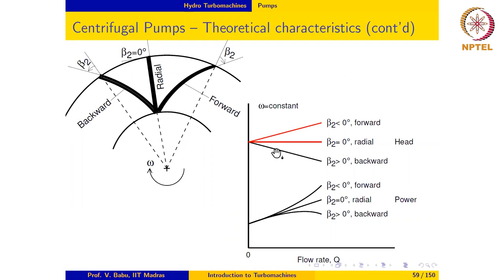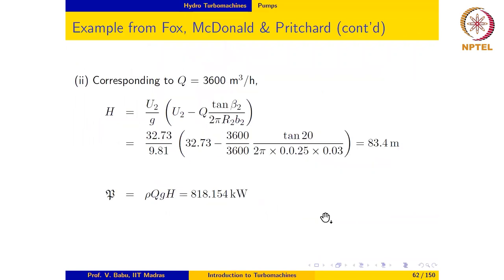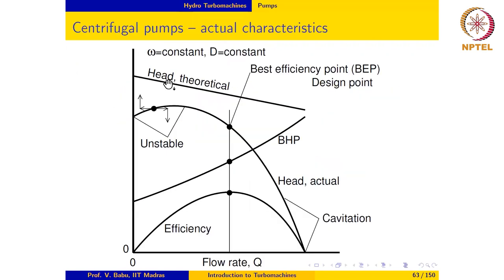The actual head versus Q is a falling characteristic throughout, and the BHP curve increases to a maximum and then begins to come down. In contrast, the forward curved design shows a rising characteristic and BHP continues to increase monotonically.